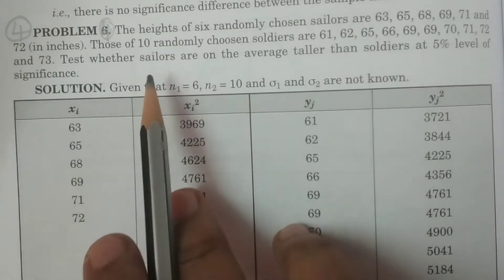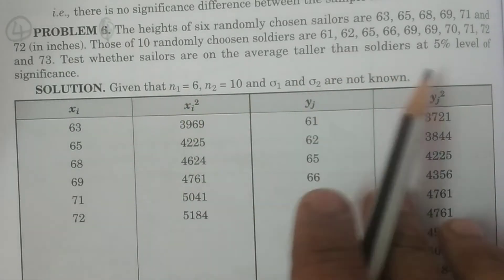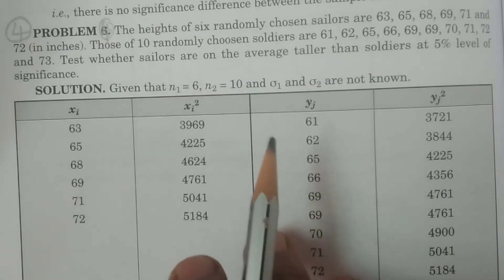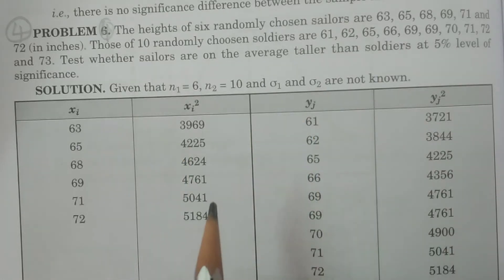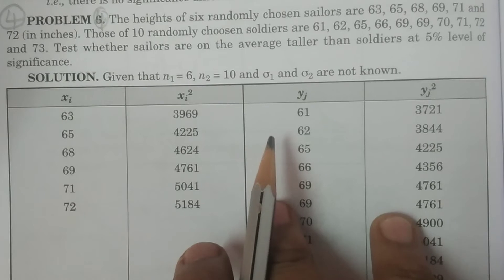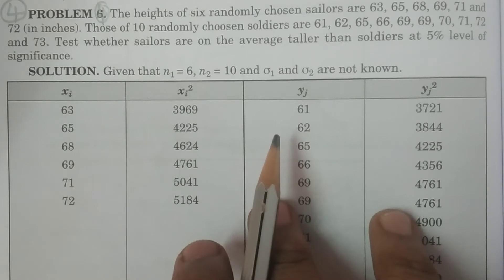We have to test whether sailors are taller than the soldiers or not, at 5% level of significance. On an average, if a specified average is involved, you have to consider the mean test. This is the problem of a T-test for means: two reasons — one, it is a small sample test; two, we are testing for means. To test significance difference of means in the small sample case, we have to use the T-distribution.